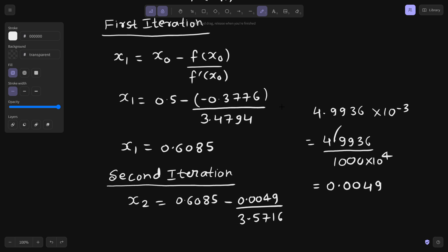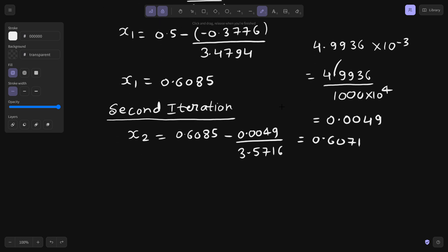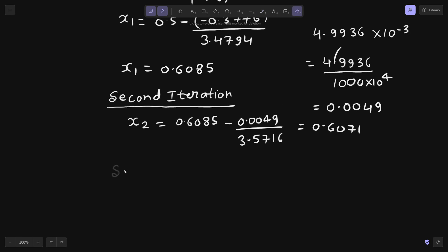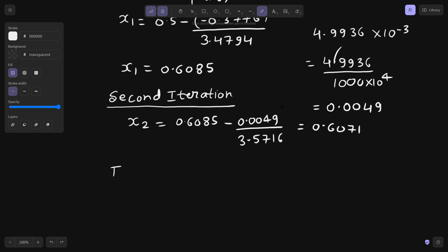Let's calculate the overall value. 0.6085 minus 0.0049 divided by 3.5716. This is giving us 0.6071. If you see up to 2 decimal places, it is matching. But let's calculate one iteration more and see what happens. Just for the sake of accuracy, you can leave the video here if you want. But let's try out the third iteration.